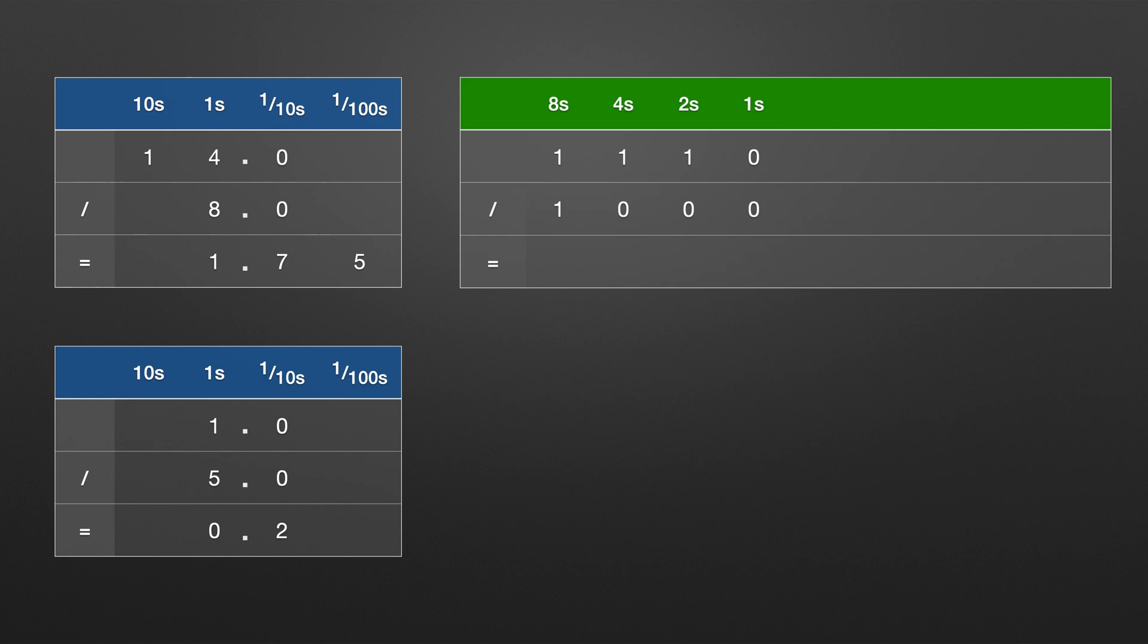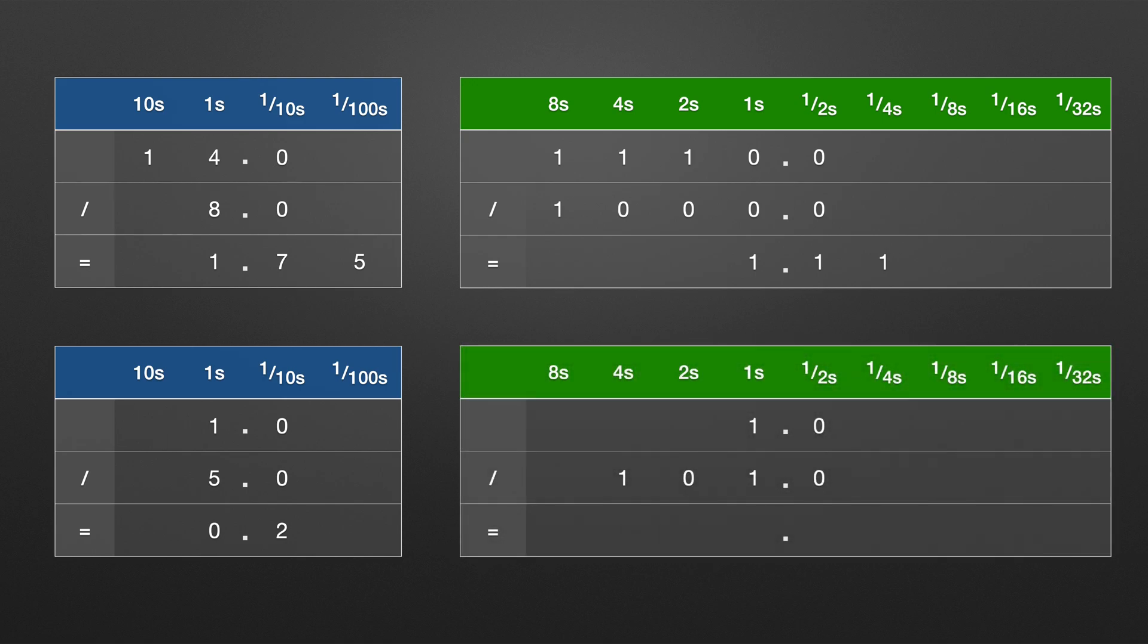But what about 1.75 in binary? Well likewise as we go right of the binary point we go down in powers of 2. And yeah that's a binary point here not a decimal point. So 1.75, well that's 1 one, 1 half and 1 quarter. And it follows that 1 plus a quarter plus a half is 1 and 3 quarters or 1.75. Okay that doesn't seem too bad then but have you spotted the looming problem yet?